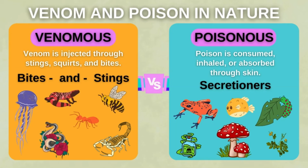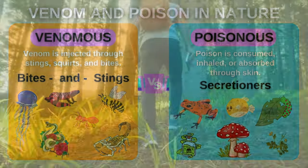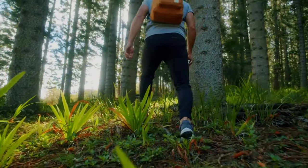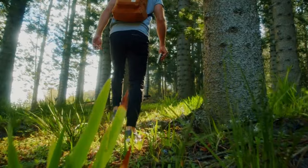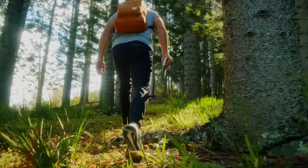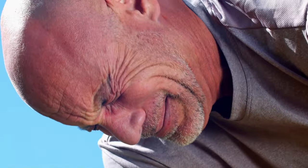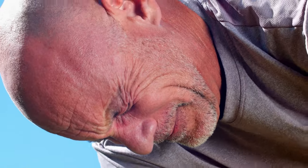In general, venom is found in various animals, while poison can be found in plants, algae, fungi, and bacteria, as well as animals. In short, both can be dangerous and lethal, but they are not interchangeable. The difference is more about how they are transmitted. Simply put, if you die when a creature bites or stings you, it is venomous, but if you die when you eat or touch a creature, it is poisonous.